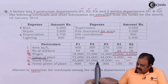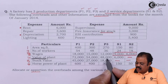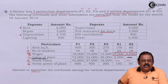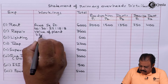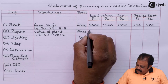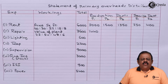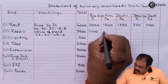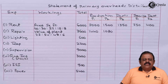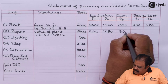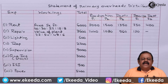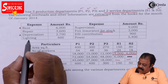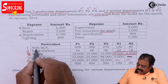Repairs will be allocated based on value of plant, in the ratio of 72000 to 54000 to 48000 to 6000. Service department 2 has no plant, so no repair expense is allocated to it. The amounts are: P1 — 1440, P2 — 1080, P3 — 960, S1 — 120.